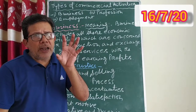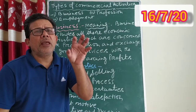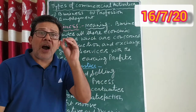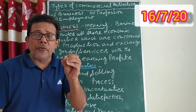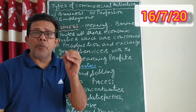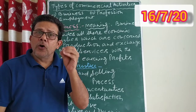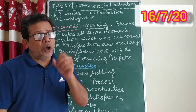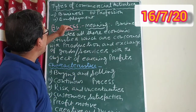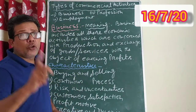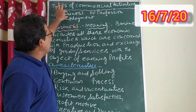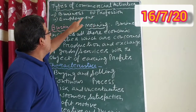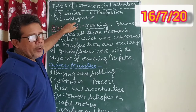Different activities that human beings perform for the purpose of earning money or profit are called commercial activities. These commercial activities are basically divided into three parts: one is called business, the second is called profession, and the last one is called employment.